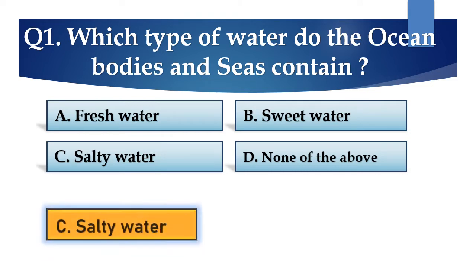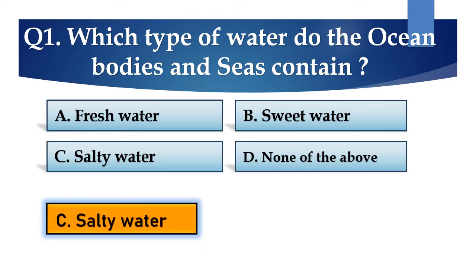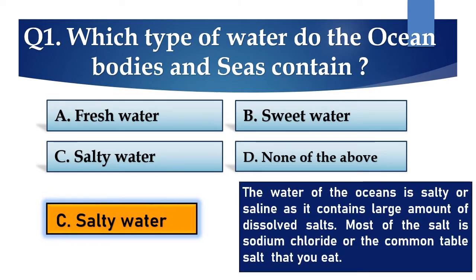And the answer is C. Salty water. The water of the oceans is salty or saline as it contains large amounts of dissolved salts. Most of the salt is sodium chloride or the common table salt that you eat.